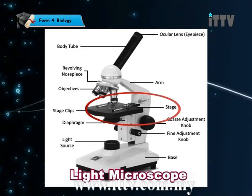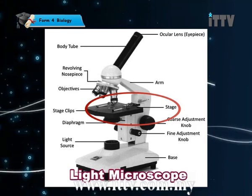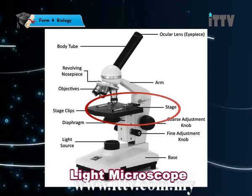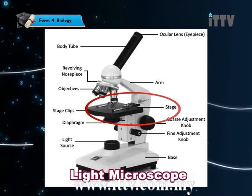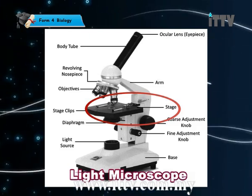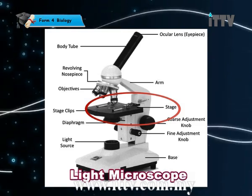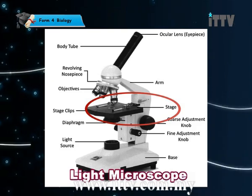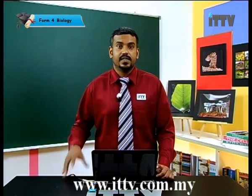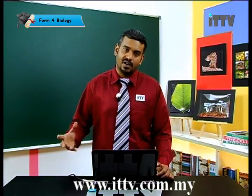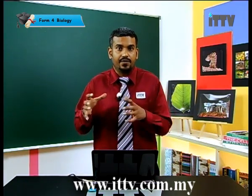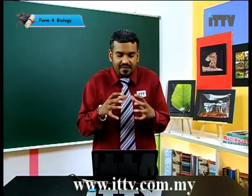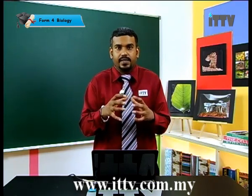There is also a stage where you place your specimen, and you clip them using stage clips so they don't move around. There are also two adjustment parts: the coarse adjustment knob and the fine adjustment knob. Which one do we adjust first? The coarse first, because it gives you a greater degree of movement. The fine tuning allows you to specifically locate a certain location in the cell itself.